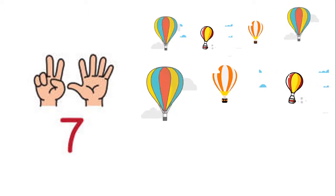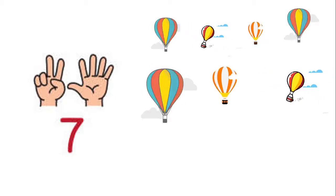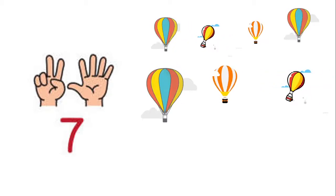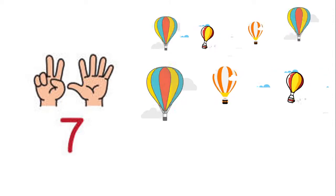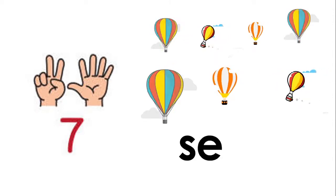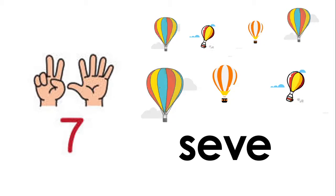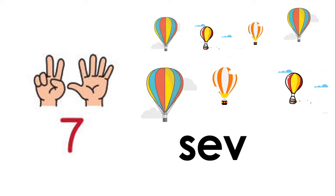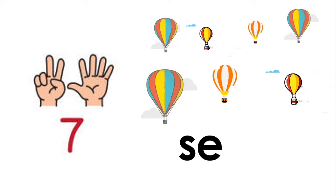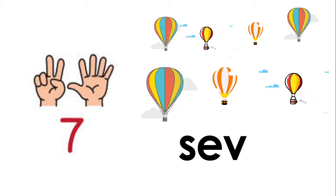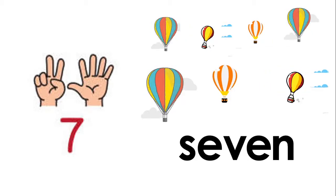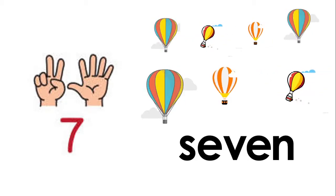So yes, they fly in the sky. So here we have 7 hot air balloons. Now let's spell the number 7. S-E-V-E-N 7. One more time. S-E-V-E-N 7. That's the way to spell the number 7.